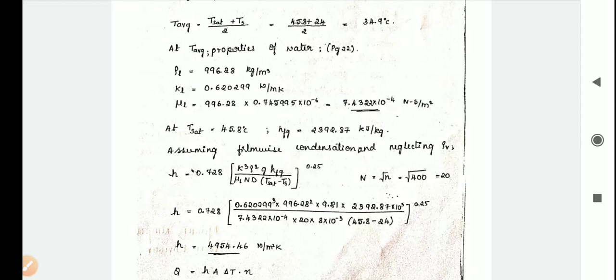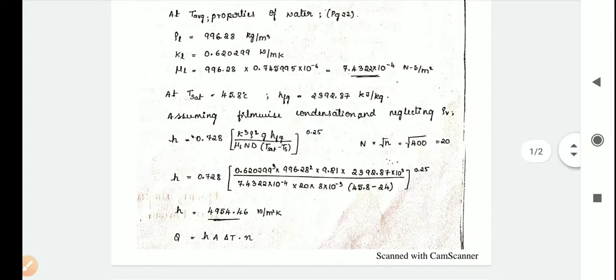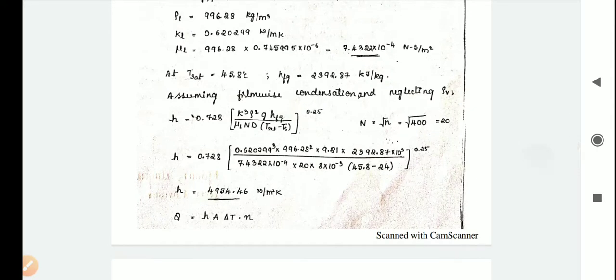Here n is square root of N, so square root of 400 which becomes 20. Substitute n equal to 20.